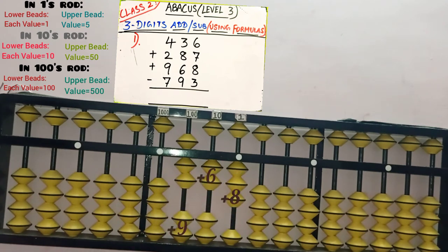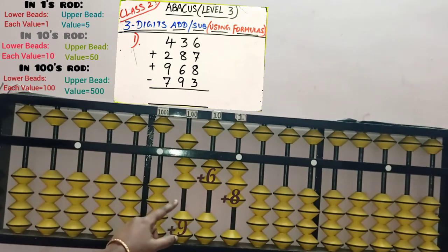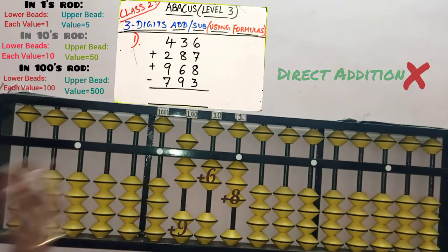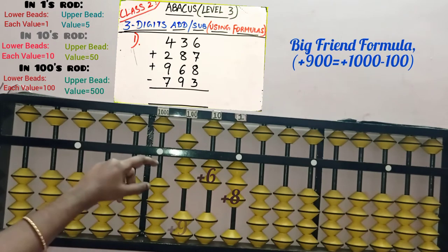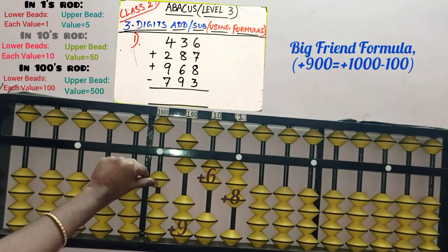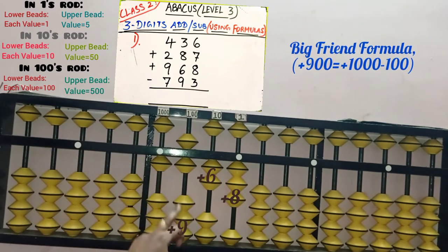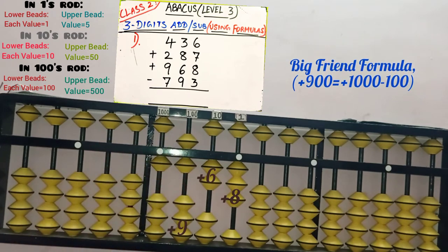Next, we move to the third row: plus 968. We need to add 9 bits in the 100s slot, 6 bits in the 10s slot, and 8 bits in the 1s slot. First, add 9 in the 100s slot — only 2 bits are available, so we cannot add 9 directly. Use big friend: 9's big friend is 1, remove 1, then add the boss in the next slot — plus 1000. Plus 1000 minus 100 equals 900 is added.